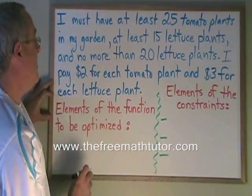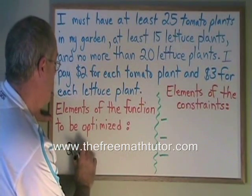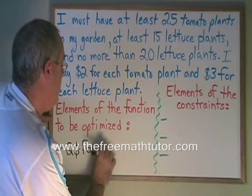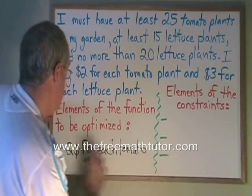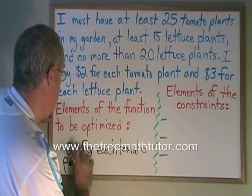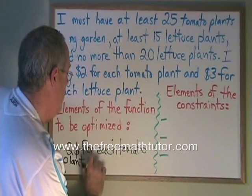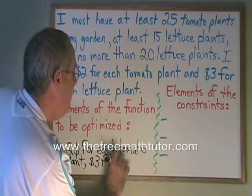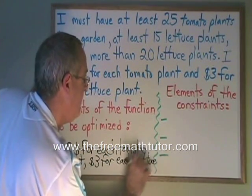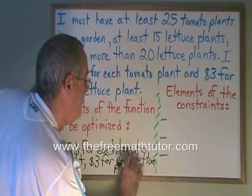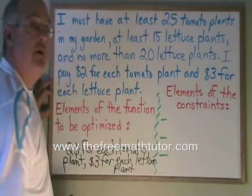The elements of the function to be optimized are: two dollars for each tomato plant, and three dollars for each lettuce plant. I have given the elements of the function to be optimized.